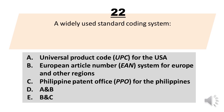A widely used standard coding system. A. Universal Product Code (UPC) for the USA. B. European Article Number (EAN) system for Europe and other regions. C. Philippine Patent Office (PPO) for the Philippines. D. A and B. E. B and C.